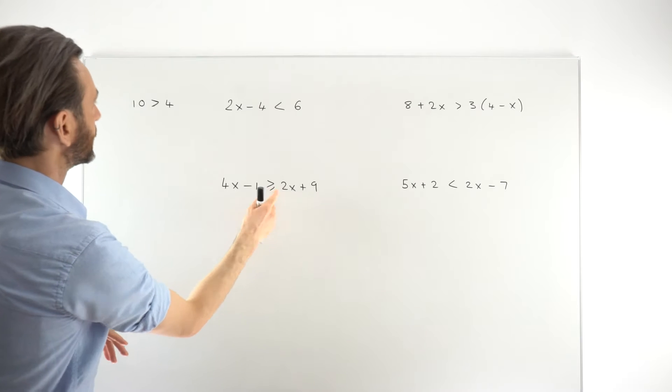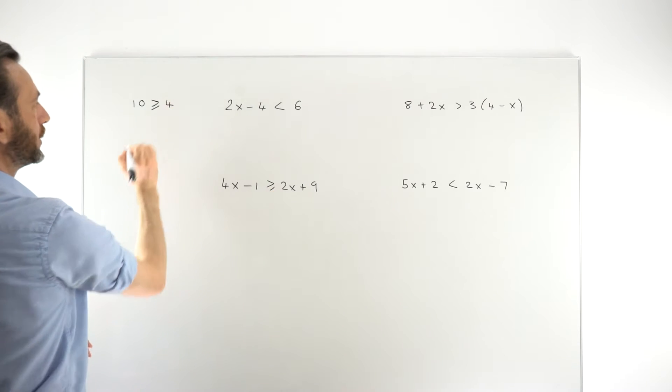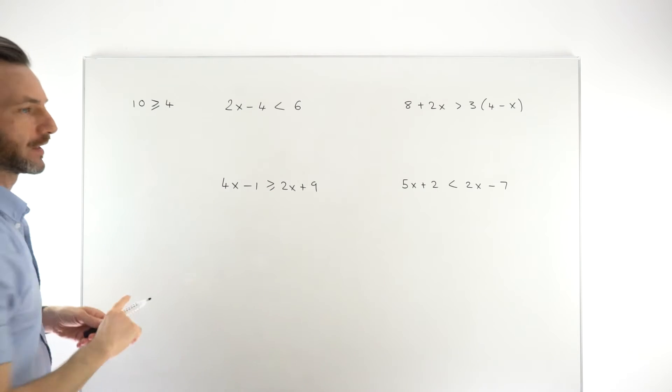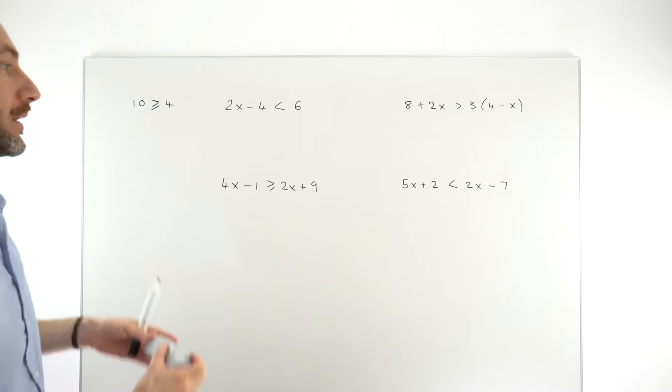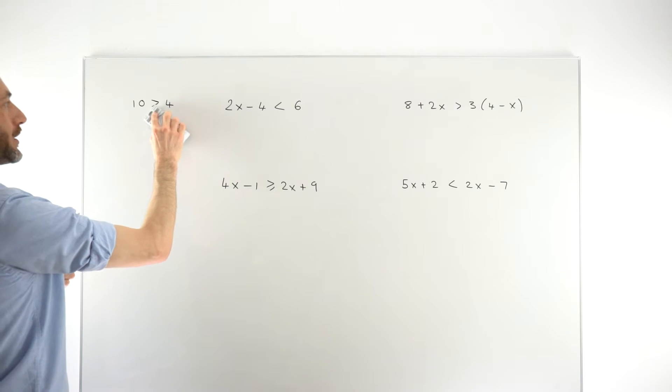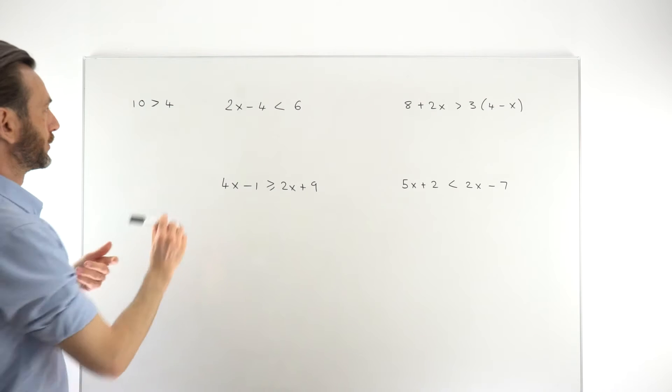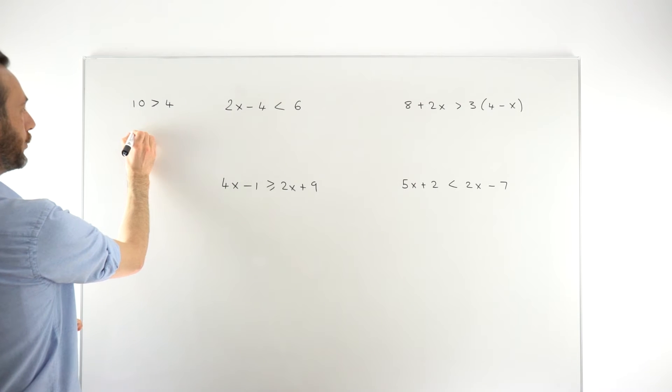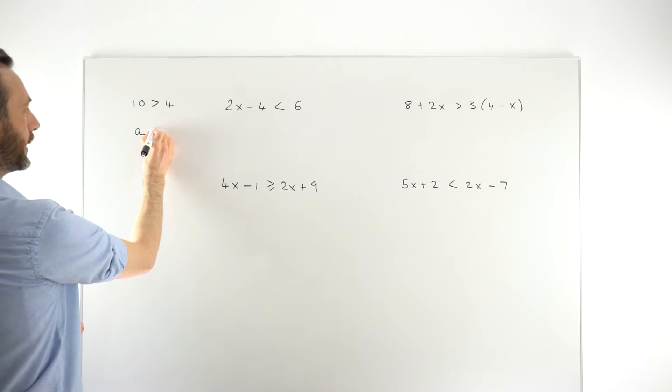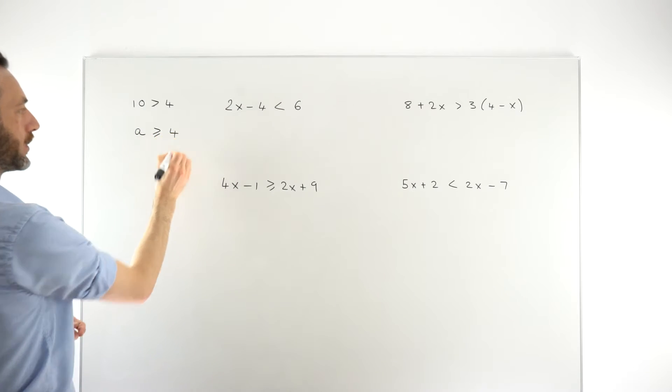If you introduce the line underneath, that means greater than or equal to. Now in that case, that's not true because 10 is greater than 4, so it can't be greater than or equal to 4. We would say that 10 is strictly greater than 4. If you introduce a variable though, if we say that a is greater than or equal to 4, that could be true.